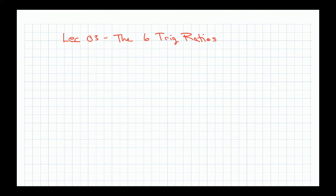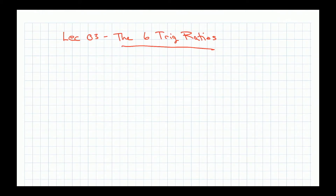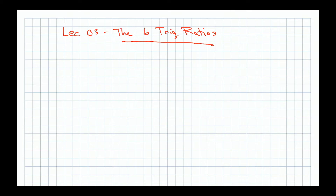All right, so we have a pretty easy lecture today. This is going to be on the six trig ratios — these are the definitions of trigonometry. There are really two types of trigonometry that we talk about in this class: right angle trigonometry and unit circle trigonometry.